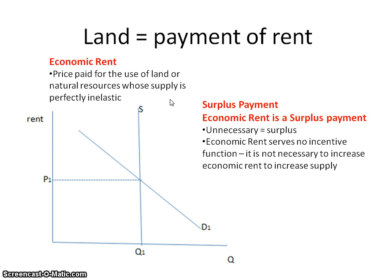Economic rent serves no incentive function given the fixed supply of land. It's not necessary to increase economic rent to bring forth more quantity, as is the case with other natural resources. Economists therefore consider economic rent a surplus payment. When you think of the term surplus, think of it as saying unnecessary.